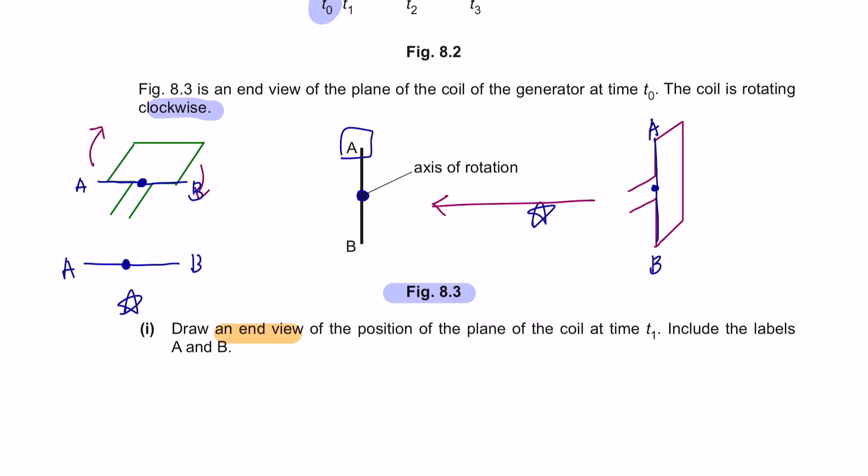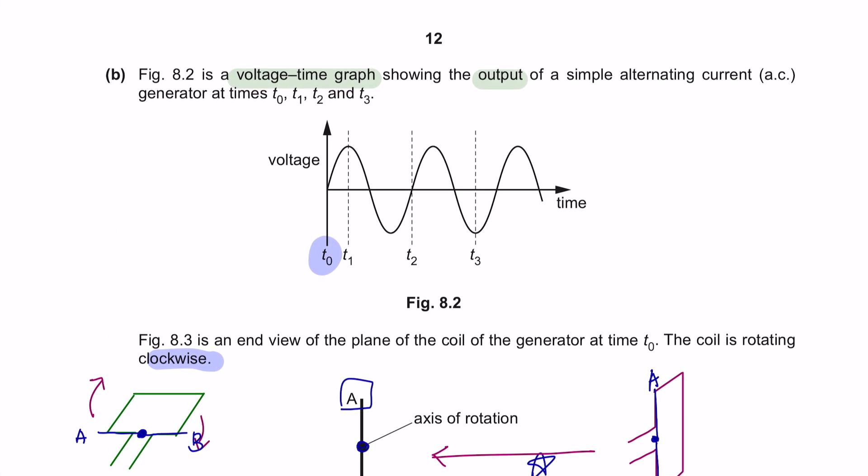Part 1. Draw an end view of the position of the plane of the coil at time T1. Include the labels of A and B. We need to find out the end view of the plane at T1. We know that at T0, this is the position of the coil. Since the coil is rotating clockwise, at T1 at maximum voltage, the coil will be at a horizontal position. A here will now move over here, and B has rotated to shift over here.